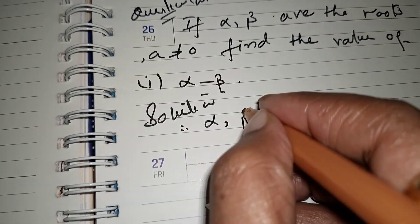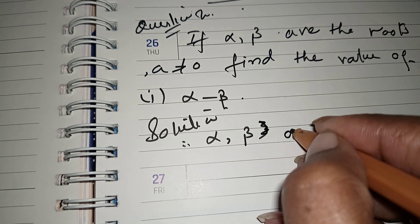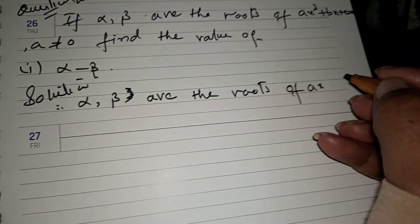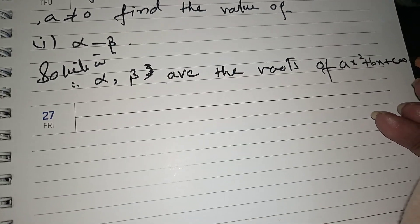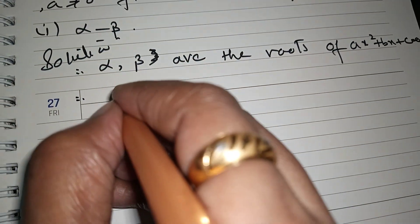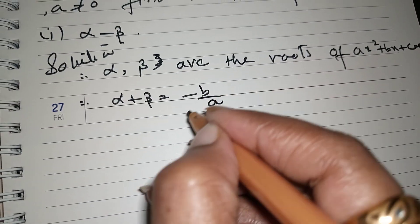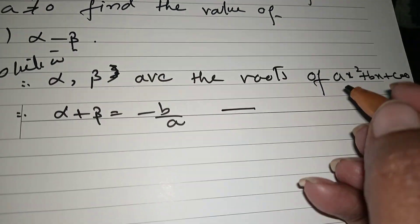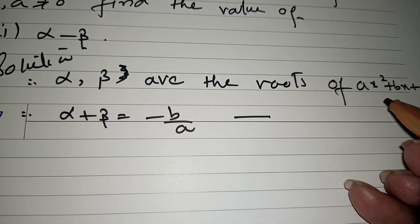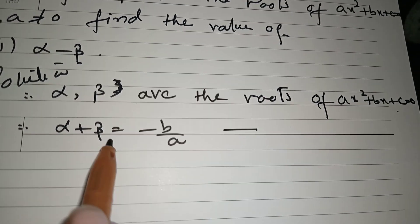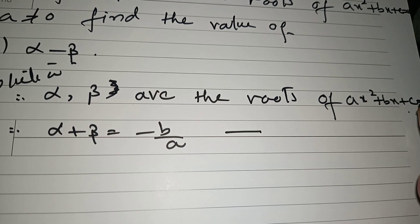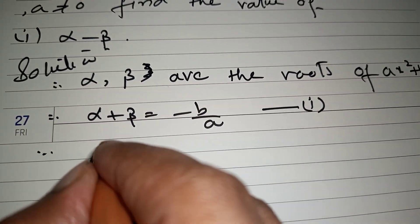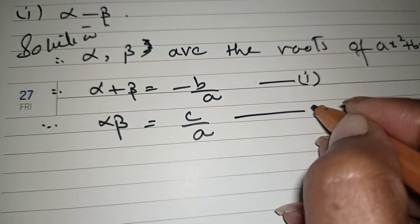Since alpha and beta are the roots of ax squared plus bx plus c equals 0, the sum of the roots is alpha plus beta equals minus b upon a, which we call equation 1. The product of the roots is alpha times beta equals c upon a.